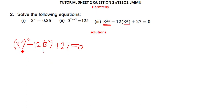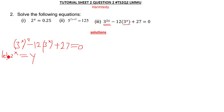We can now let 3 to the power x be equal to a variable — I'm going to choose y. So let 3^x equal y. Wherever there is 3^x in the equation, we substitute y. This gives us y squared minus 12y plus 27 equals 0.